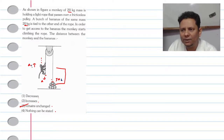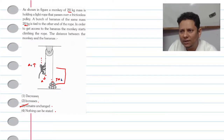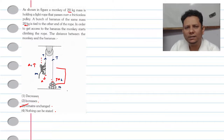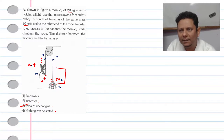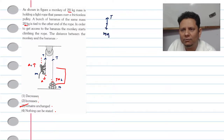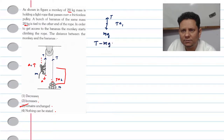The monkey is going up with A1, the banana is going up with A2, and the tension in the rope is T. The mass of both is 20 kg, but we solve in generic form with mass M. If we make the free body diagram (FBD) for the monkey, we have tension T upward, weight Mg downward, and acceleration A1. So we can write: T minus Mg equals M times A1. This is equation number 1.